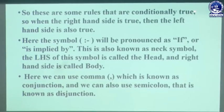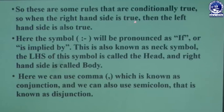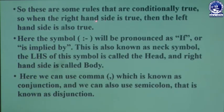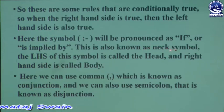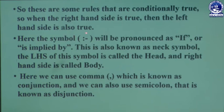These are some rules that are conditionally true. When the right-hand side is true, then the left-hand side is also true. The symbol ':-' is pronounced as 'if' or 'is implied by', and is also known as the neck symbol. The left-hand side of this symbol is called the head, and the right-hand side is called the body.